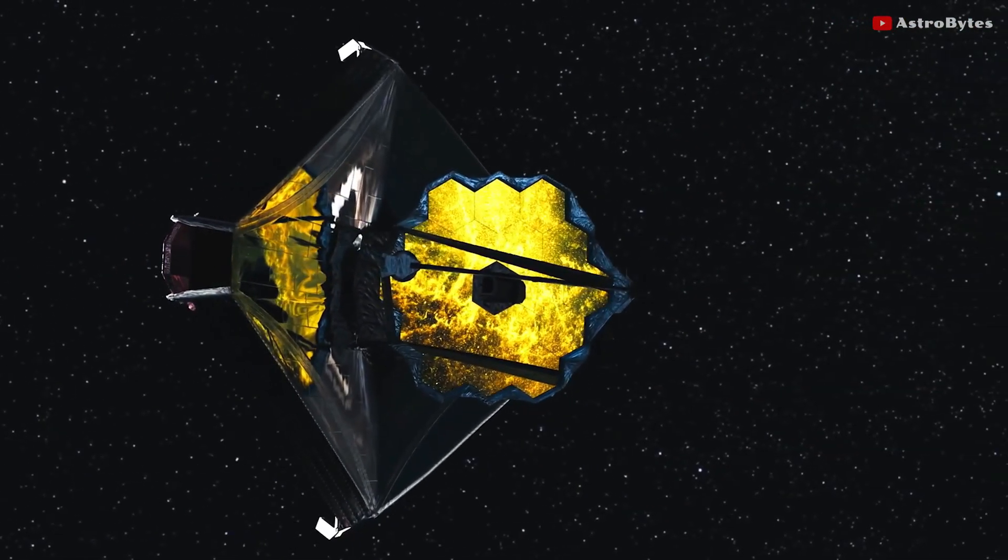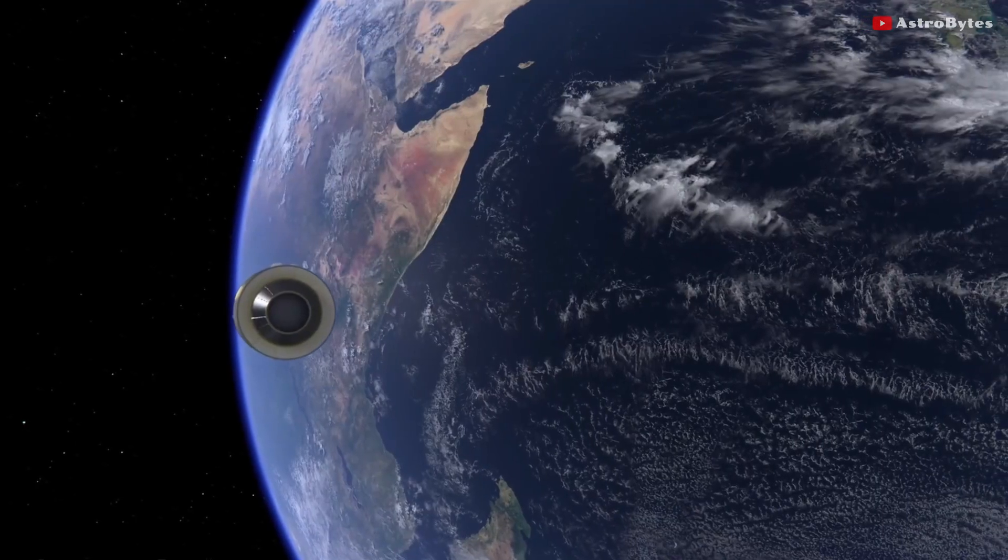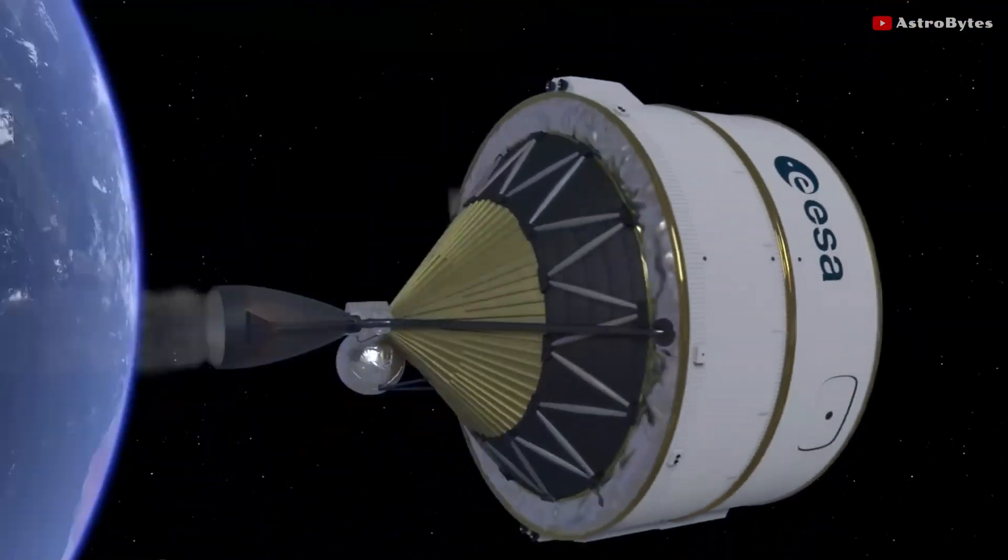NASA released the first-ever images taken from the James Webb Telescope. The James Webb Telescope was launched on December 25, 2021 and arrived at its final orbit a month later.